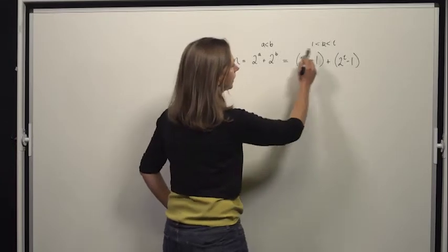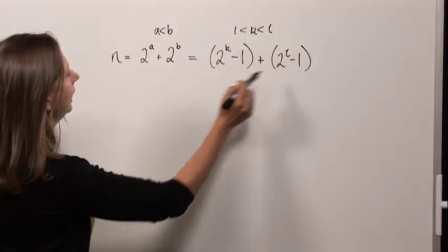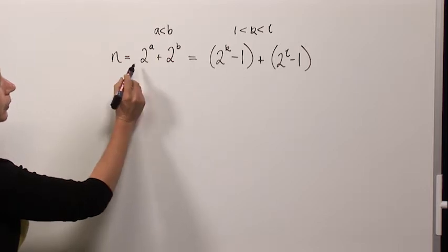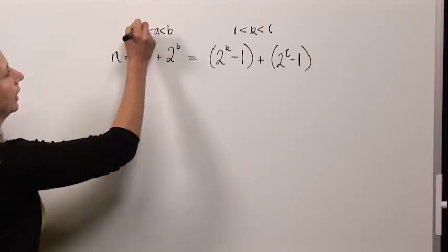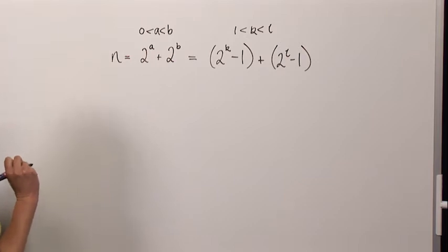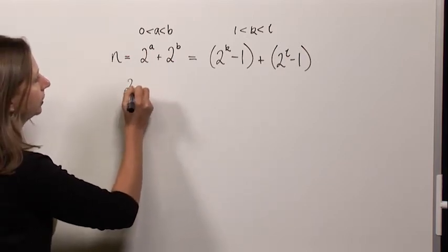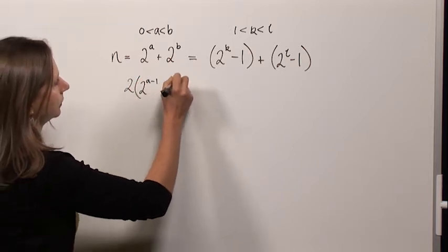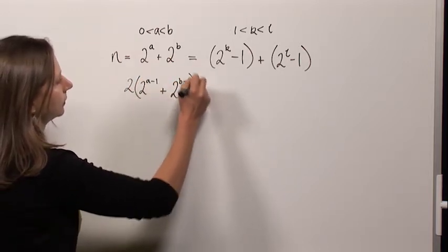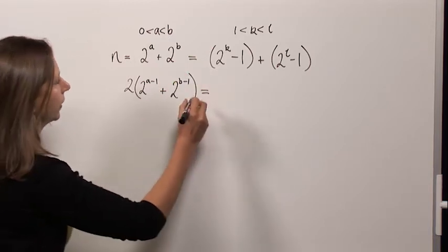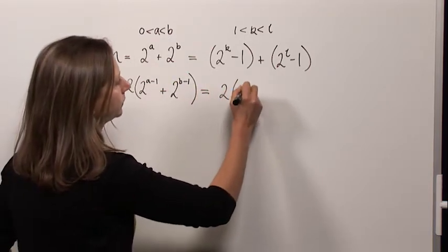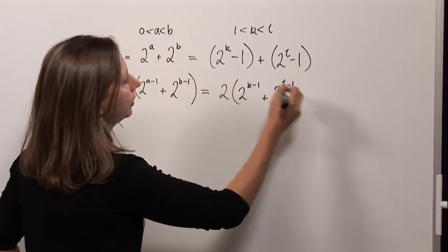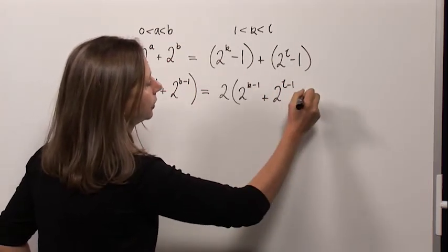And now if we look at this side, this side is clearly even, which means that this side is also even, so we know that a has got to be bigger than zero. We've got two even sides, so let's take out a factor of two. I'll do the same on the other side.